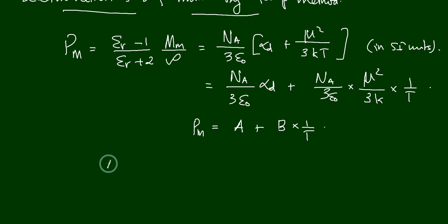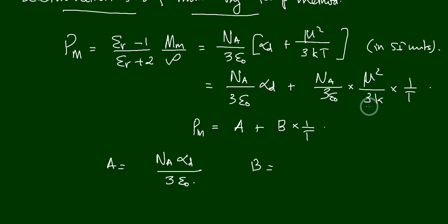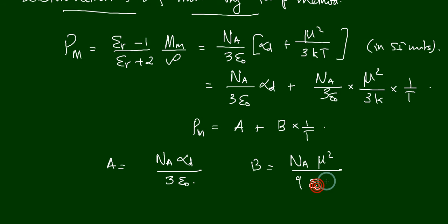Here, a is equal to Na·αd divided by 3ε₀ — this is a constant because αd is a constant for a particular substance. And b is equal to Na·μ² divided by 9ε₀k.